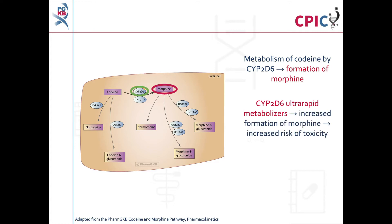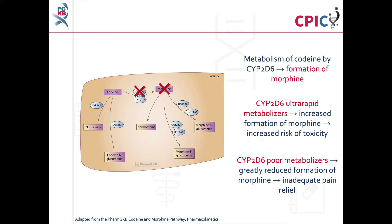In CYP2D6 ultra-rapid metabolizers, the formation of morphine from codeine is increased, which puts the patient at an increased risk of experiencing morphine toxicity. In CYP2D6 poor metabolizers, the formation of morphine from codeine is greatly reduced. As a result, patients who are CYP2D6 poor metabolizers do not get sufficient pain relief from codeine due to the low levels of morphine formed.